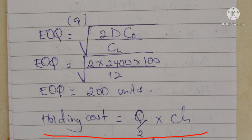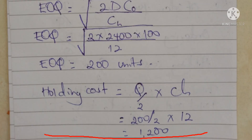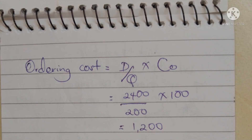Next we calculate the holding cost. The formula is: Q divided by 2, times the holding cost per unit. Q equals our EOQ of 200 units, so it's 200/2 times 12. The calculator gives us a holding cost of 1,200 shillings.